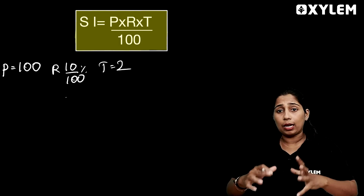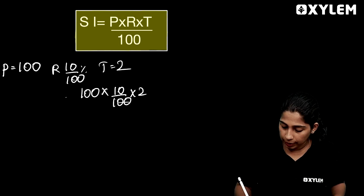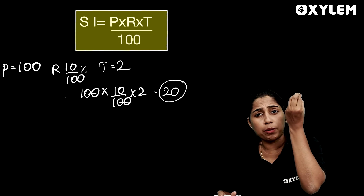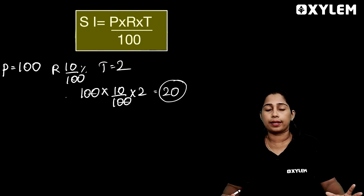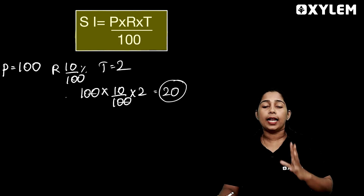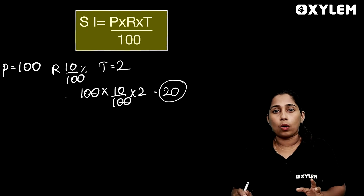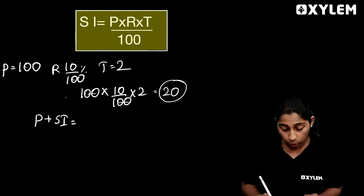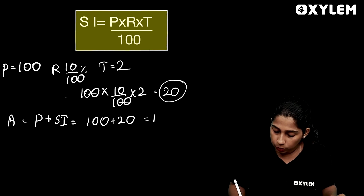Then we substitute these values: 100 × 10/100 × 2. We cancel and the answer will be 20. The total amount is equal to P plus simple interest — that is 100 plus 20 equals 120.